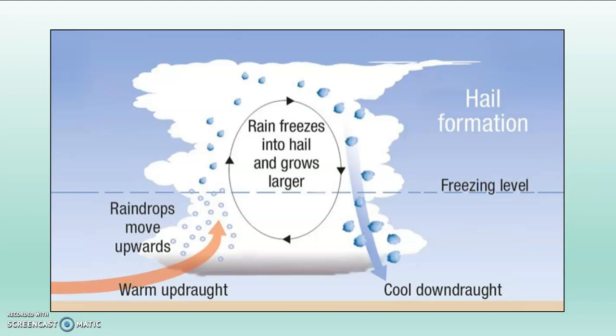In the middle of the diagram it says 'rain freezes in the hail and grows larger,' with a circle going around. The hailstone begins to fall down through the cloud, passes below the freezing level where it's warmer, and liquid water forms around it through condensation. Then it gets thrown back up again, and that water freezes. Each time it goes around, it gets bigger and bigger. At some point either the winds break down and it falls to the ground, or it gets so large it can no longer be held up and down it comes.